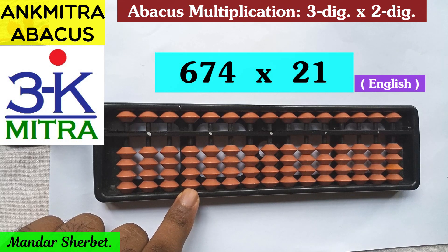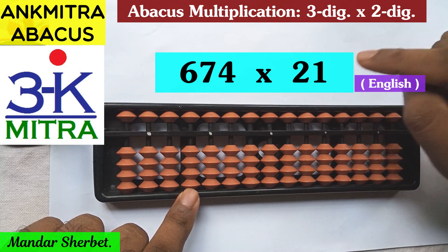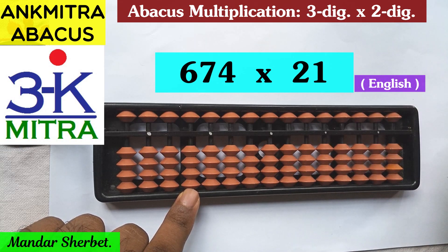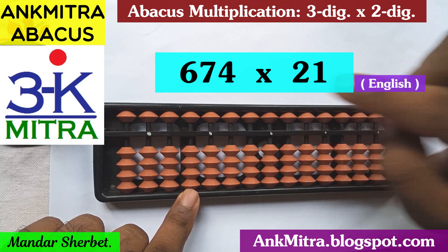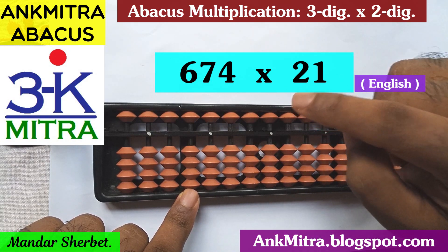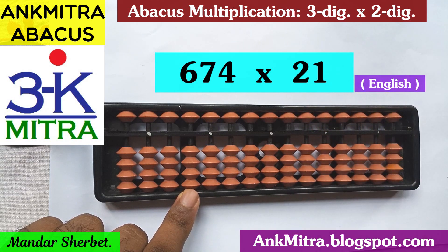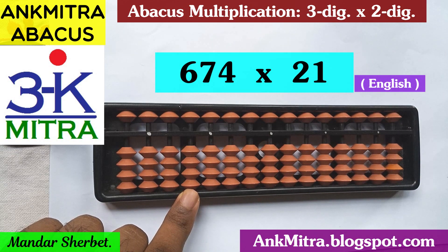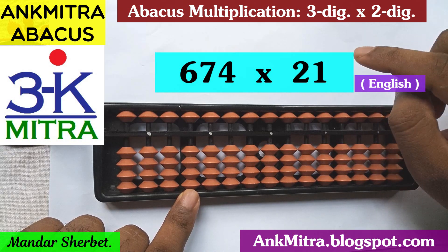There will be two parts to this calculation. In the first part, I'll consider the tens place digit — that is 2 from the multiplier 21 — and multiply it with each of the digits of the multiplicand 674. Then in the second part, we'll multiply with the units place digit, which is 1. So we'll start with the first part.